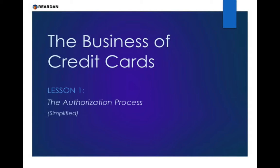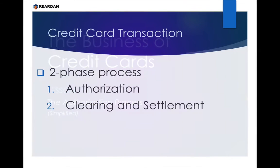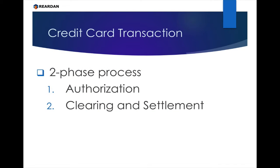In most situations, when someone pays in person with a credit card, the transaction happens in two phases. The first phase is called the Authorization Phase. The second phase is called the Clearing and Settlement Phase. These two phases happen at different times in the process. The Authorization Phase happens at the point of sale, and it isn't until the end of the day, or maybe even after a few days, until the second phase starts.